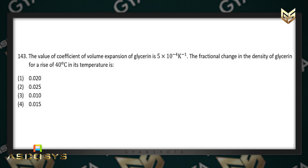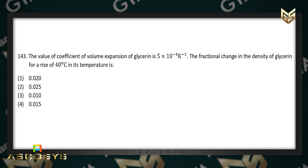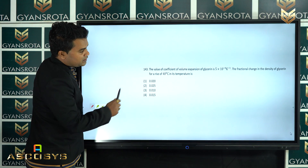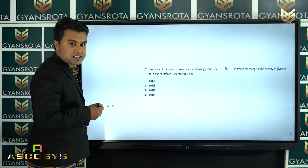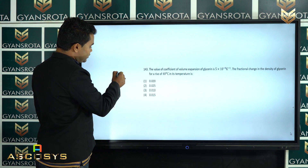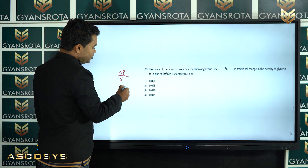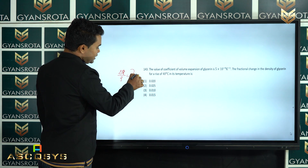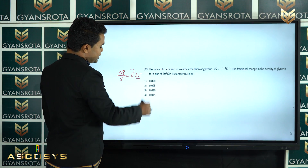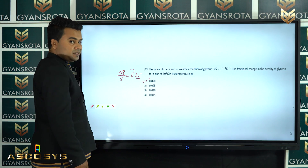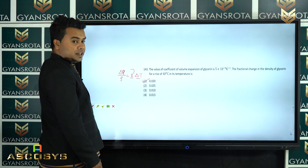Question 143: the coefficient of volume expansion of glycerin is 5 × 10⁻⁴ per Kelvin. The fractional change in density of glycerin for a rise of 40°C is asked. Using the formula Δρ/ρ = γ × ΔT, with γ and ΔT both given, solving gives option 1 as the correct answer.